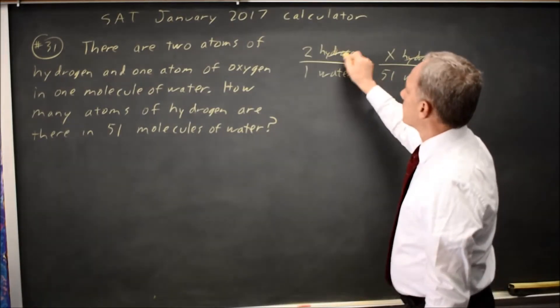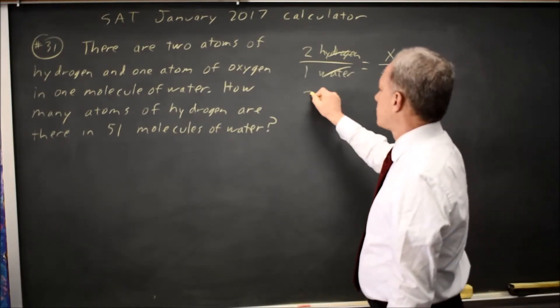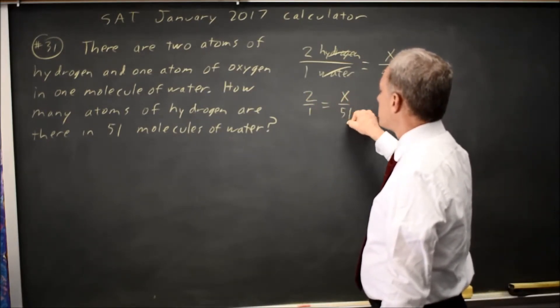So ignoring the hydrogen and the water, I just wrote that to make sure I was setting it up correctly. I have 2 over 1 equals x over 51.